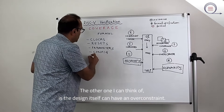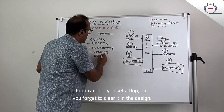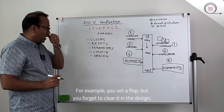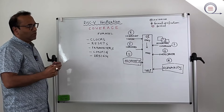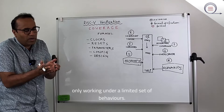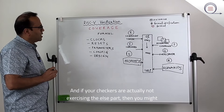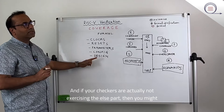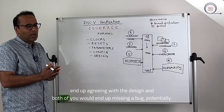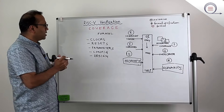The design itself can also have an over-constraint. For example, you set a flop but forget to clear it in the design. That basically means the design is only working under a limited set of behaviors. And if your checkers are not exercising that space, then you might end up agreeing with the design and both would end up missing a bug potentially.